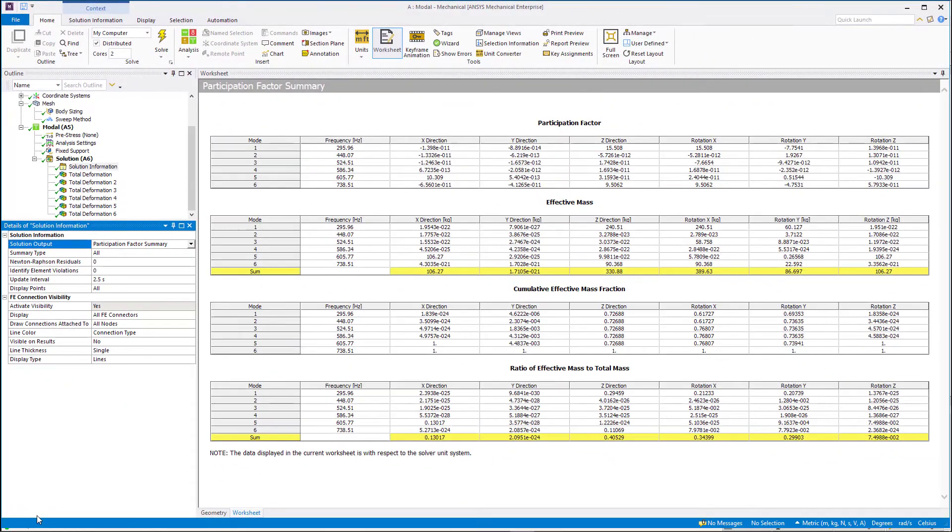The participation factor is used to determine how much of the mass of the certain mode is moving in the same direction as the excitation. A high value in a direction indicates that the mode will be excited by forces in that direction. Participation factors are available in all six directions as we mentioned previously.